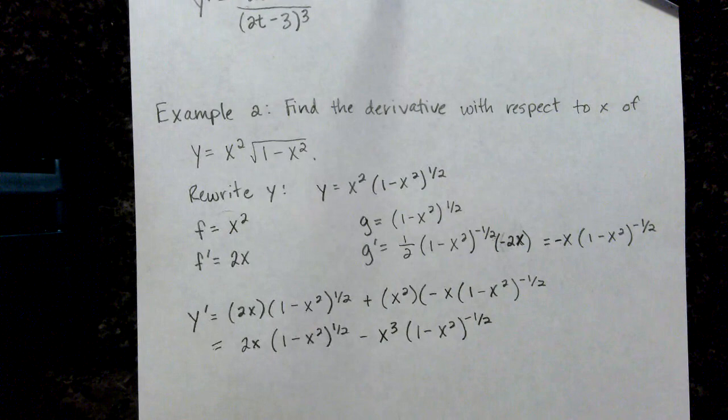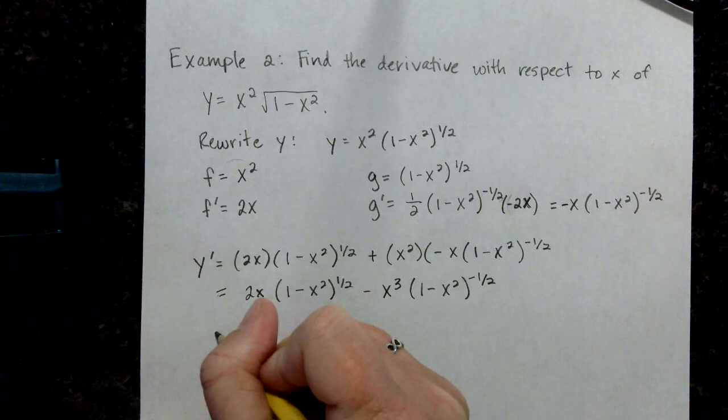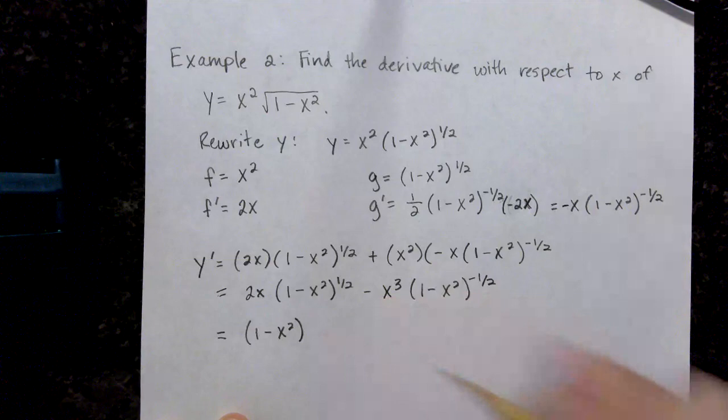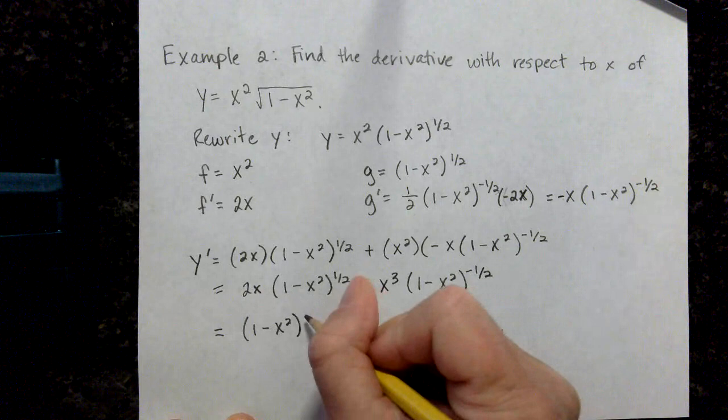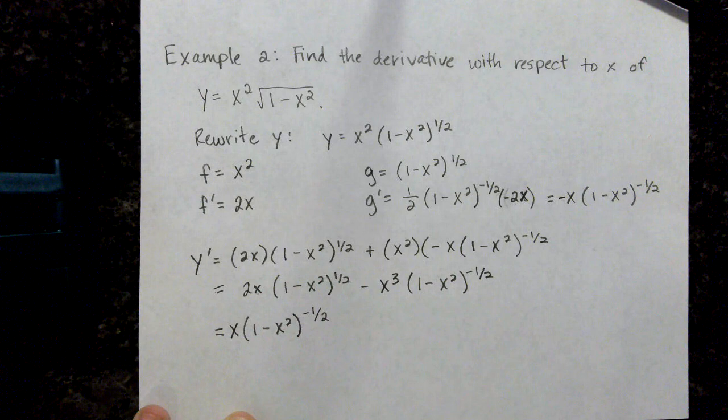This part here is always sort of tricky for people. I can see that I have a 1 minus x squared factor. So what I'm going to do is I'm going to pull out that 1 minus x squared factor. And then I want to pull out the smallest exponent. So negative 1 half is smaller. I can see that I can pull out that. I also see that I have an x in both of my terms.